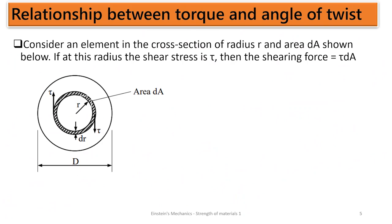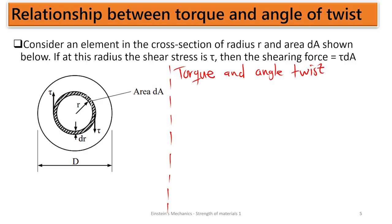Hello, welcome to Einstein's Mechanics. In this episode we are going to look at the relationship between the torque and the angle of twist. We know that torque simply means there is a twist in the member, and the moment there is a twist means there is an angle at which we are twisting the member. So if we are given the angle of twist, we should have an idea of the torsion that caused that deformation.